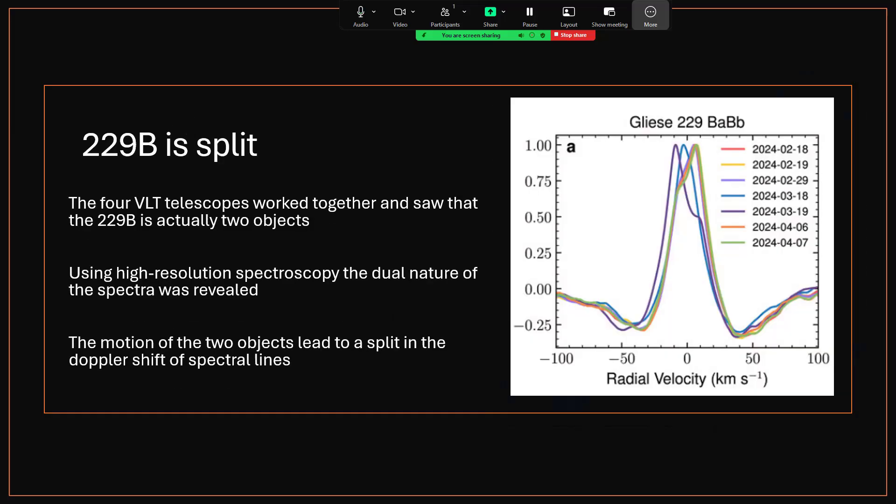But recently, the VLT, very large telescope, in fact four very large telescopes working together as an interferometer, were able to have a good look at what was going on with 229B, and determined from the images they were able to construct and from looking at the radial velocity with the spectrometer, the SINFONI spectrometer,